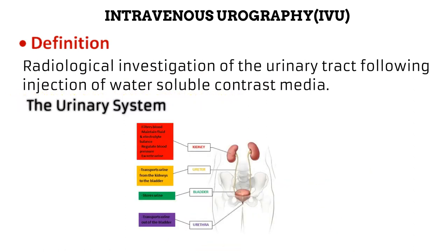The urinary system is made of two kidneys, which help to remove waste products from the blood, maintain a balance of fluid and electrolytes in the body, regulate the blood pressure, and excrete urine. Two ureters transport urine from the kidneys to the bladder. One bladder acts as a reservoir for storing urine, and one urethra transports urine from the bladder to outside the body. Over the course of this procedure, we will make reference to different anatomical structures of the kidneys and other parts of the urinary system, so you may want to brush up on your anatomy.